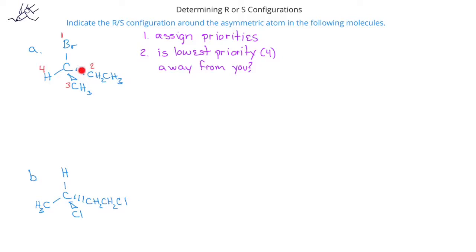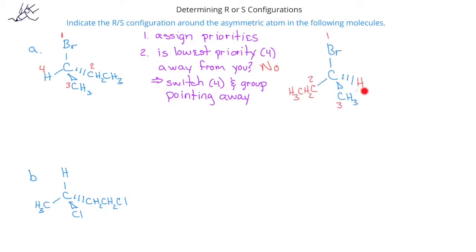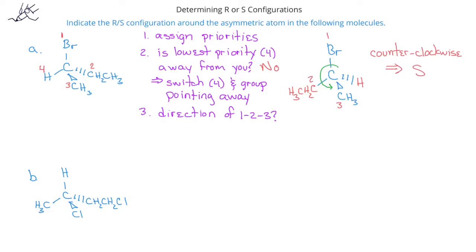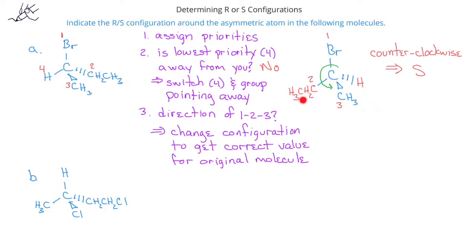Recall with the wedge-dash drawings that the dashed bond is pointed away from the viewer. The hydrogen, however, is even with the plane of the paper. Since the hydrogen, the number 4 priority, is not pointed away from us, we can switch those two groups — the hydrogen and the ethyl group — so that the hydrogen will be pointed away from us. Now that the hydrogen is pointed away from us, we can see which direction we need to go from priority 1 to 2 to 3. In this case, that direction is counterclockwise, indicating this enantiomer is in the S configuration. However, since we switched the hydrogen and the ethyl group from the initial compound, the original compound must be in its R configuration.